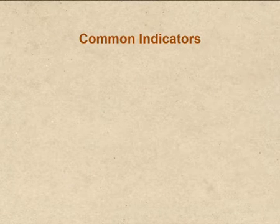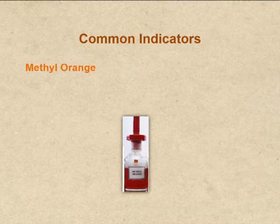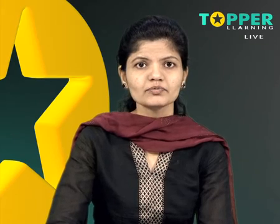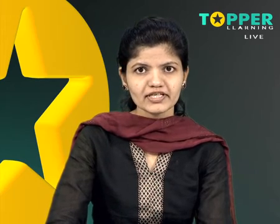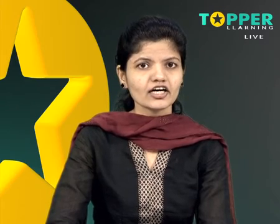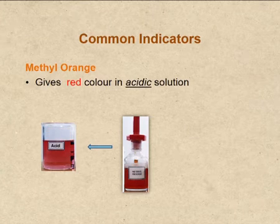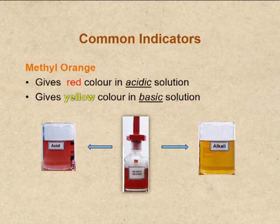The second common indicator is methyl orange. Methyl orange is an intensely colored compound used in dyeing and printing textiles. Chemists use methyl orange as an indicator in the titration of weak bases with strong acids. Methyl orange gives a red color in acidic solution and a yellow color in basic solution.